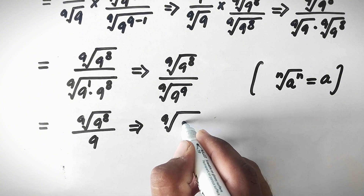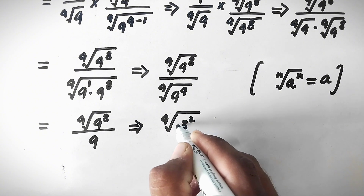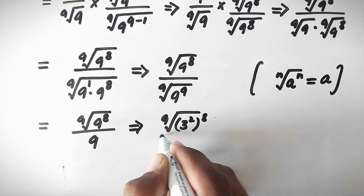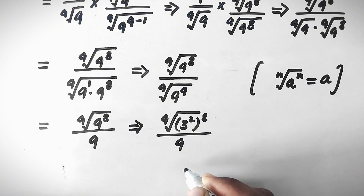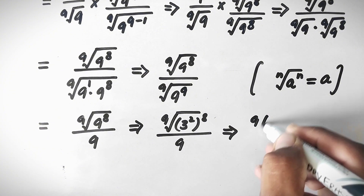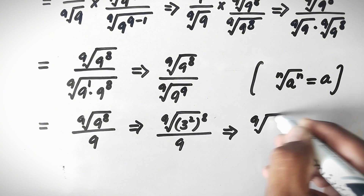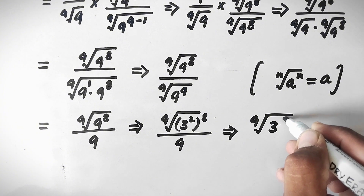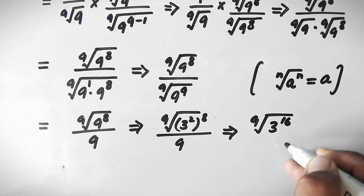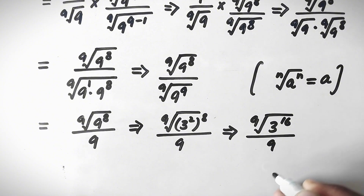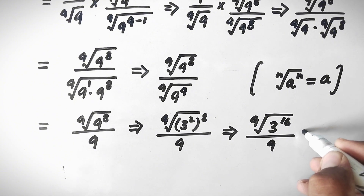Since 9 is the square of 3, we rewrite this as the 9th root of 3 squared to the power 8, divided by 9. This becomes the 9th root of 3 to the power 16, divided by 9.